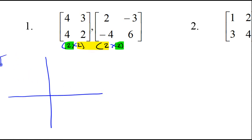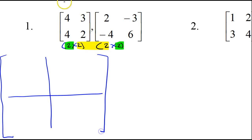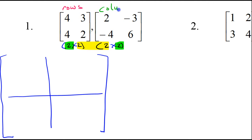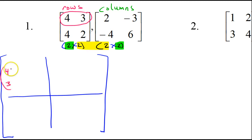Here's our empty 2×2 matrix. We have learned that the rows always come from the first matrix, while the columns always come from the second matrix. The first row goes in the first row — so the first row is 4, 3 — I'm going to put 4, 3 all across the first row.